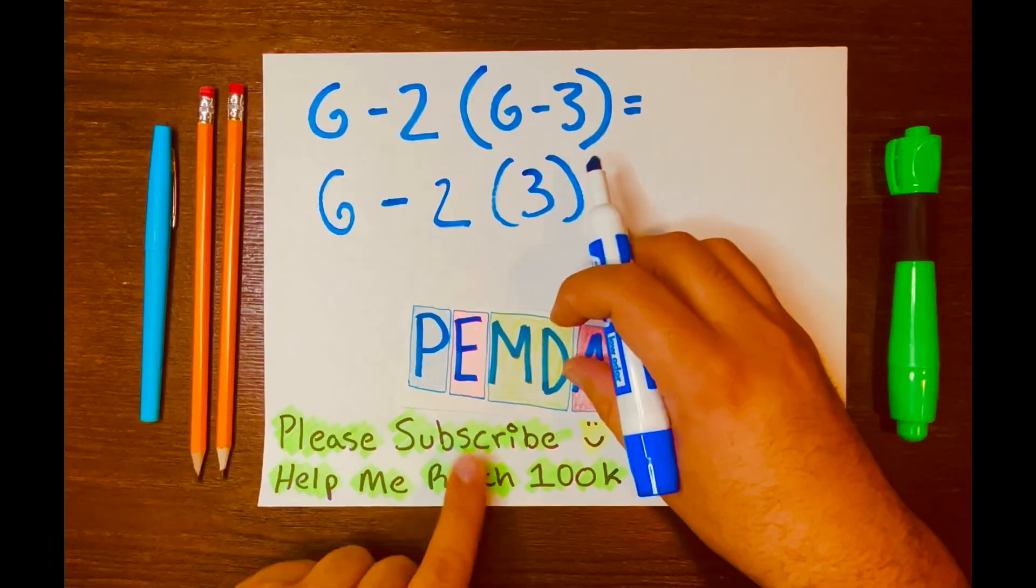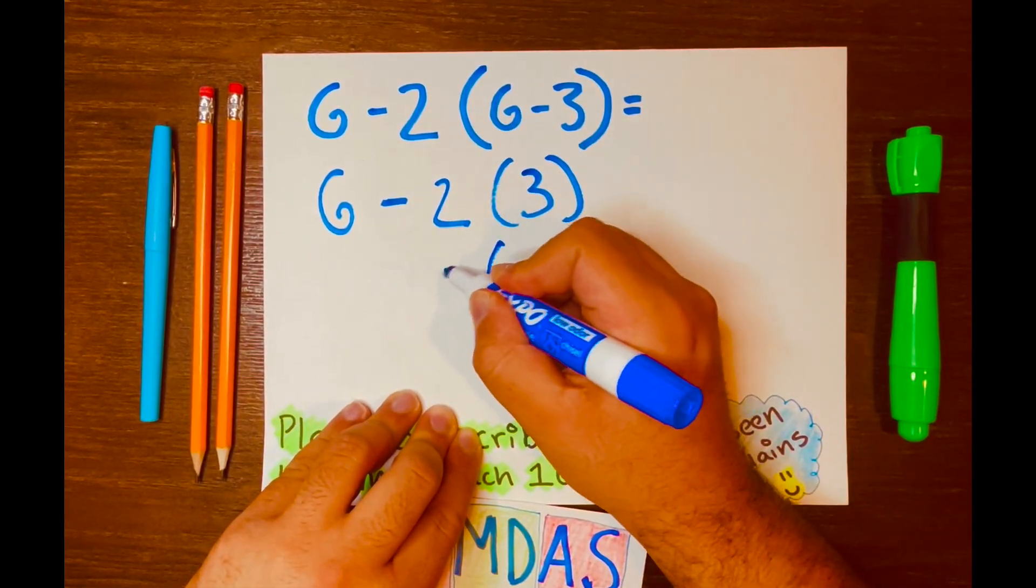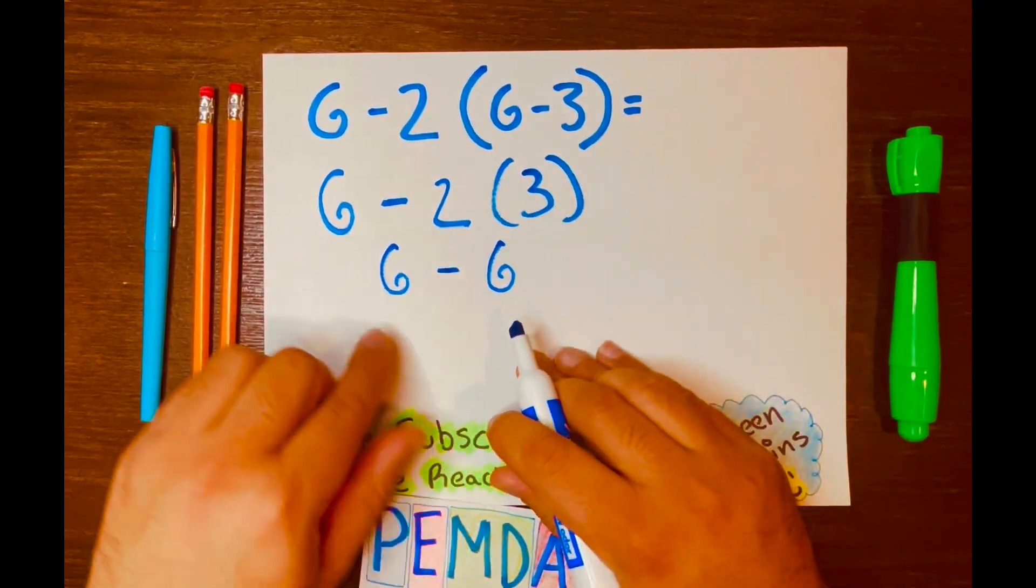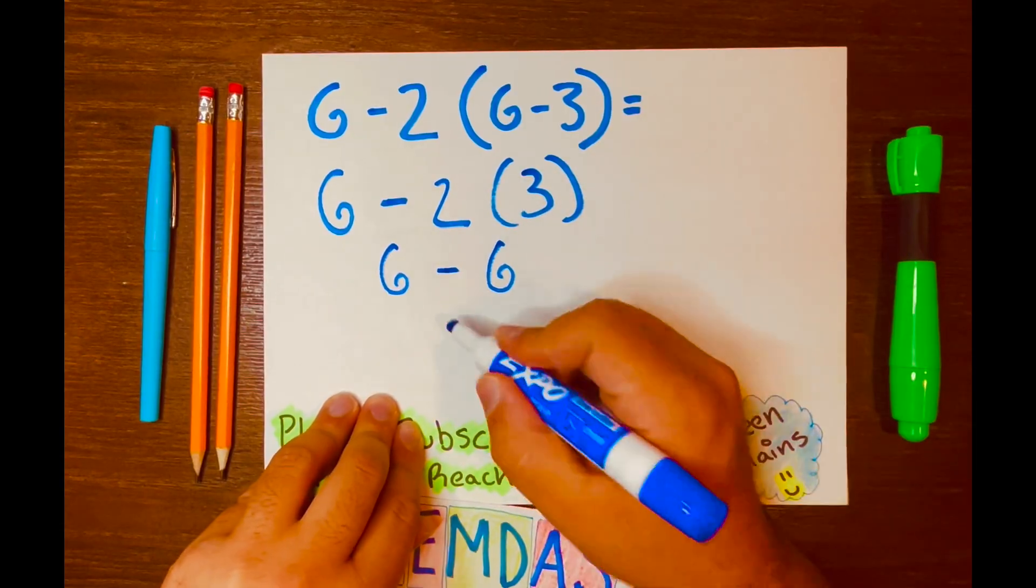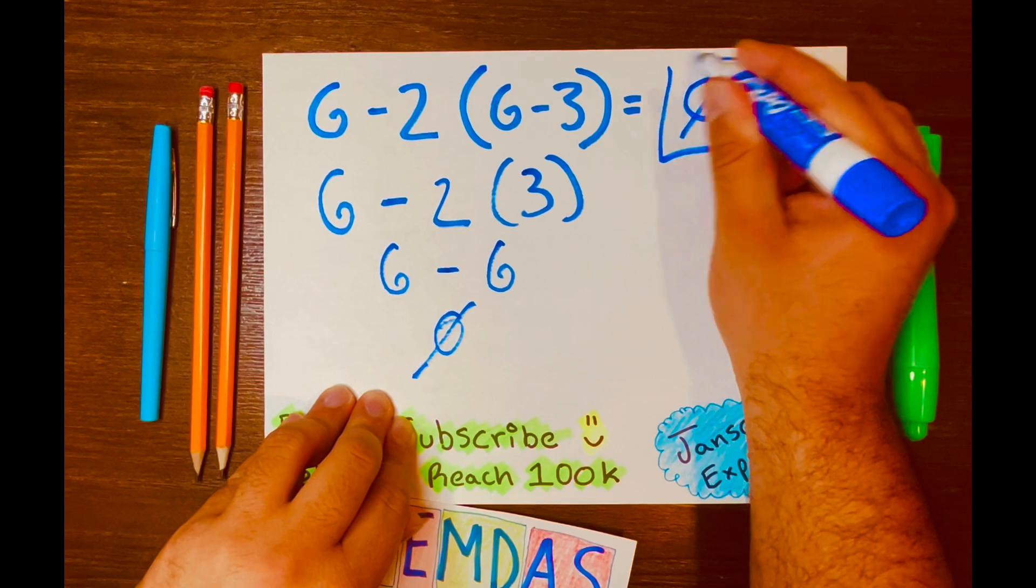So 2 times 3 equals 6. Bring down the subtraction symbol and then the 6. Now you have 6 minus 6. And 6 minus 6 equals 0. So your answer is 0.